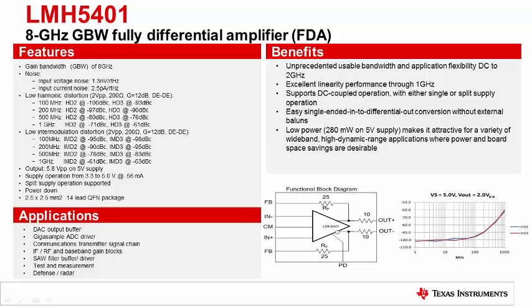The LMH5401 is a very wideband, fully differential amplifier with a gain bandwidth of 8 GHz. It has the ability to support from DC up to 1 GHz of signal bandwidth with very good harmonic performance and provide some gain as well. This device can be used to buffer the DAC output to drive a system that requires a high performance wideband differential signal.